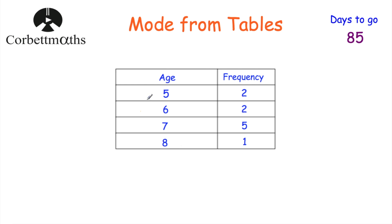Here we've got a frequency table with some ages: five-year-olds, six-year-olds, seven-year-olds and eight-year-olds, with their frequencies. There are two five-year-olds, two six-year-olds, five seven-year-olds, and one eight-year-old, and we've been asked to find the mode from this frequency table.